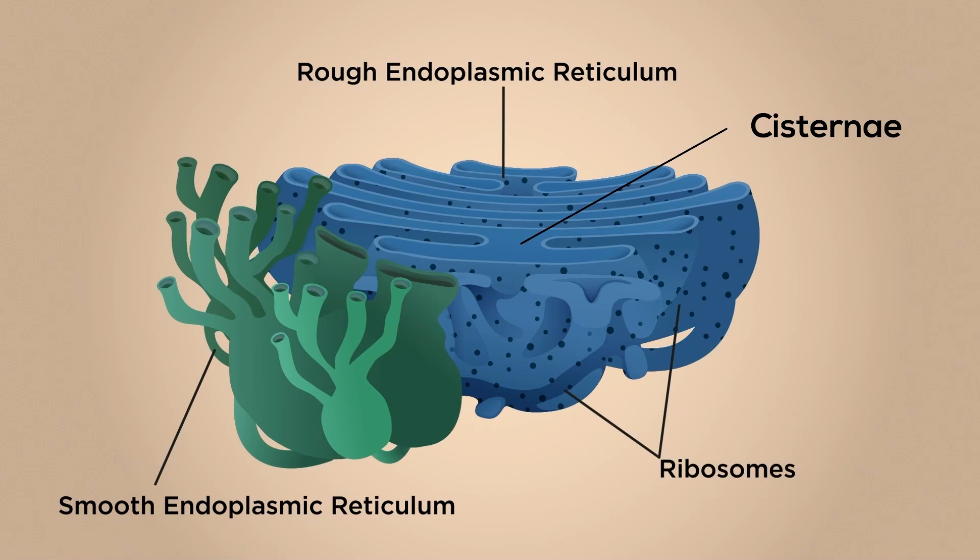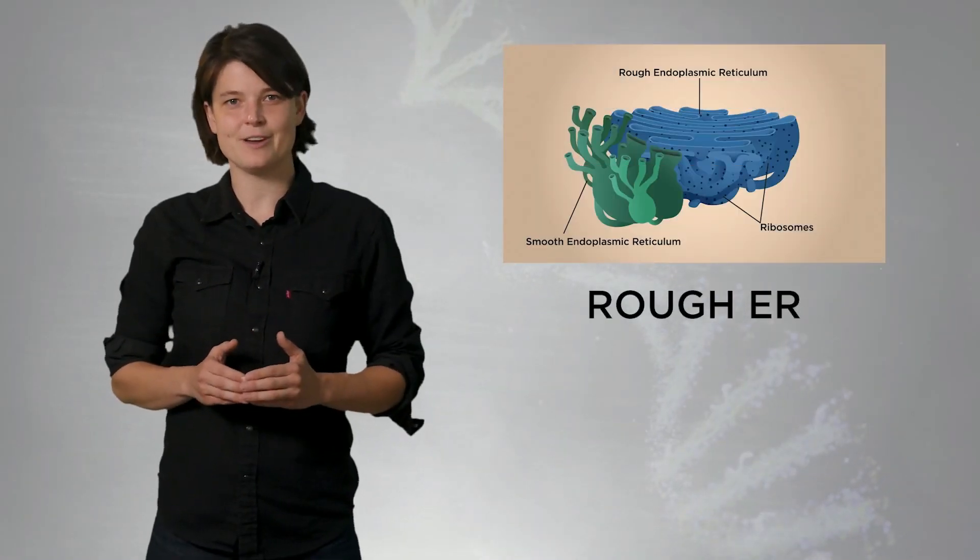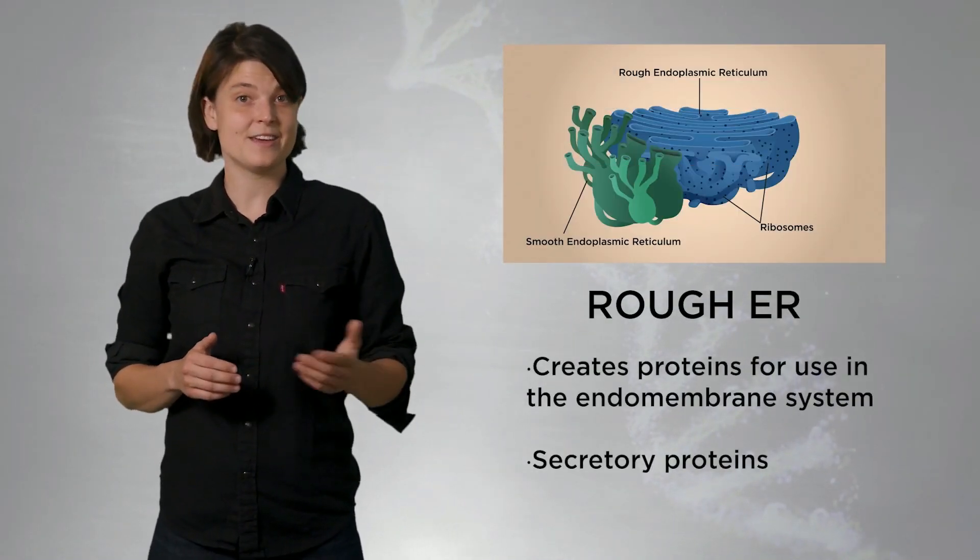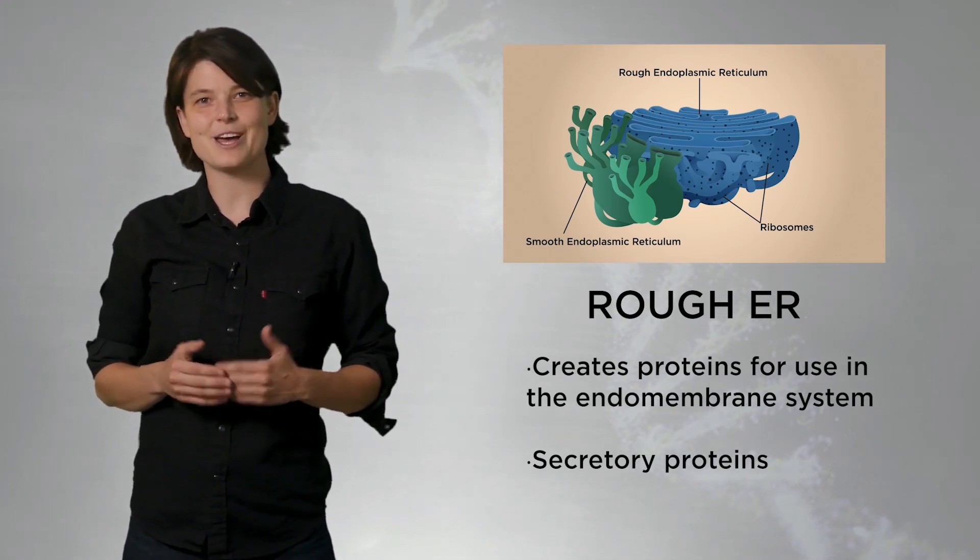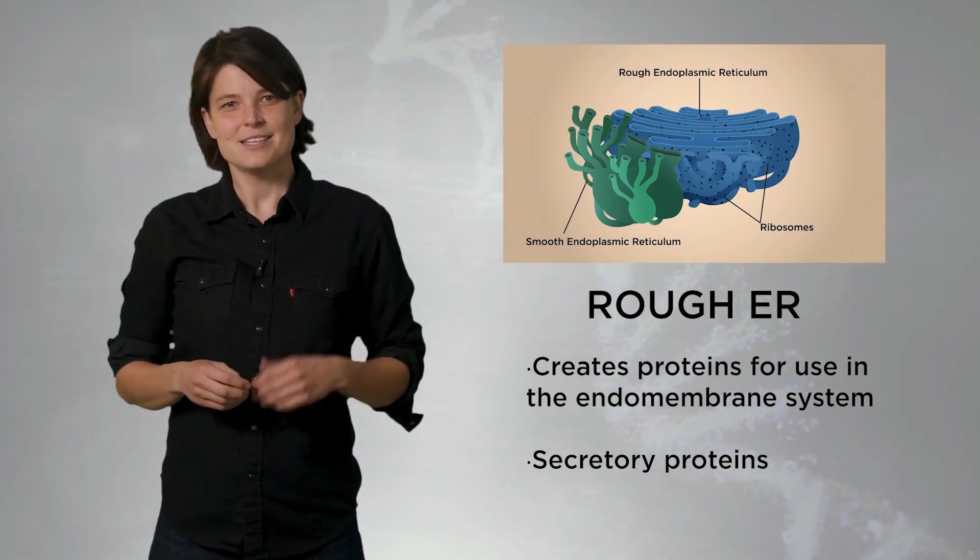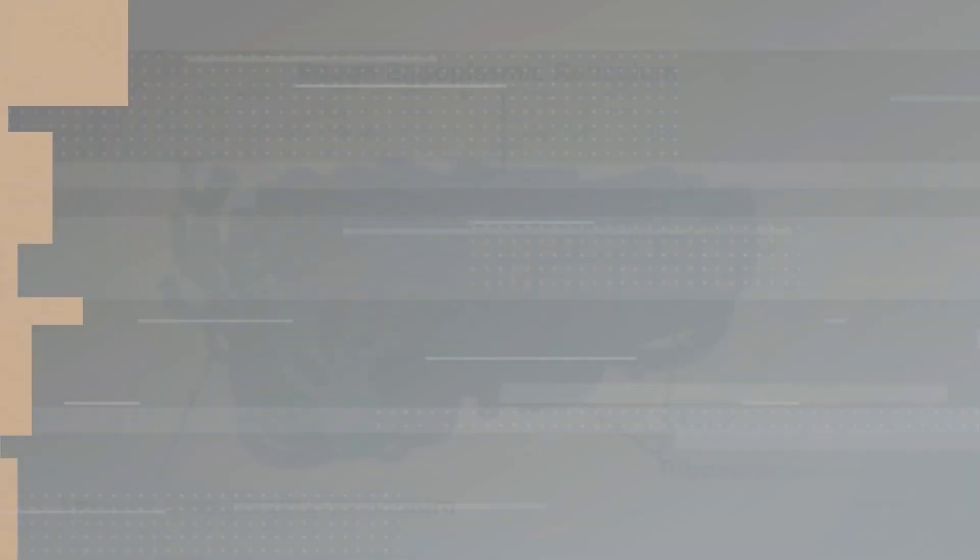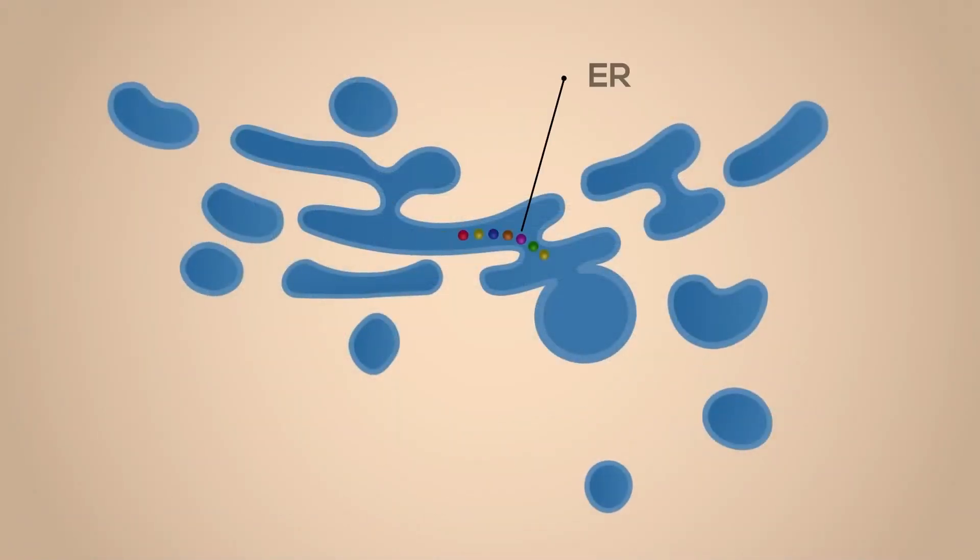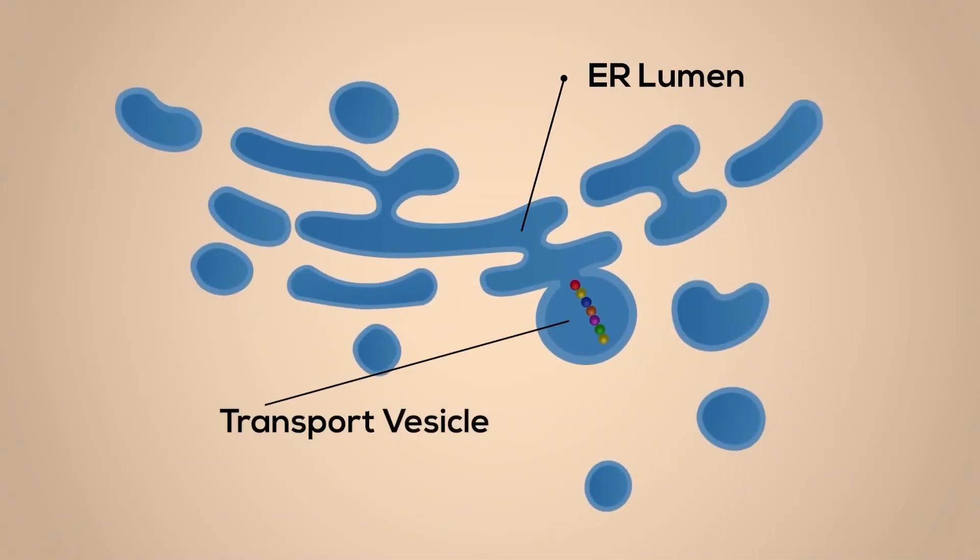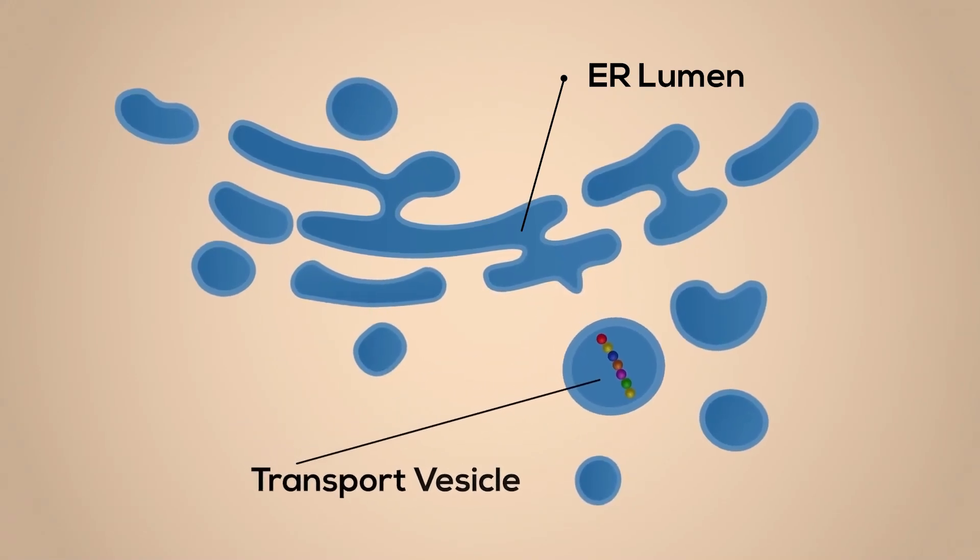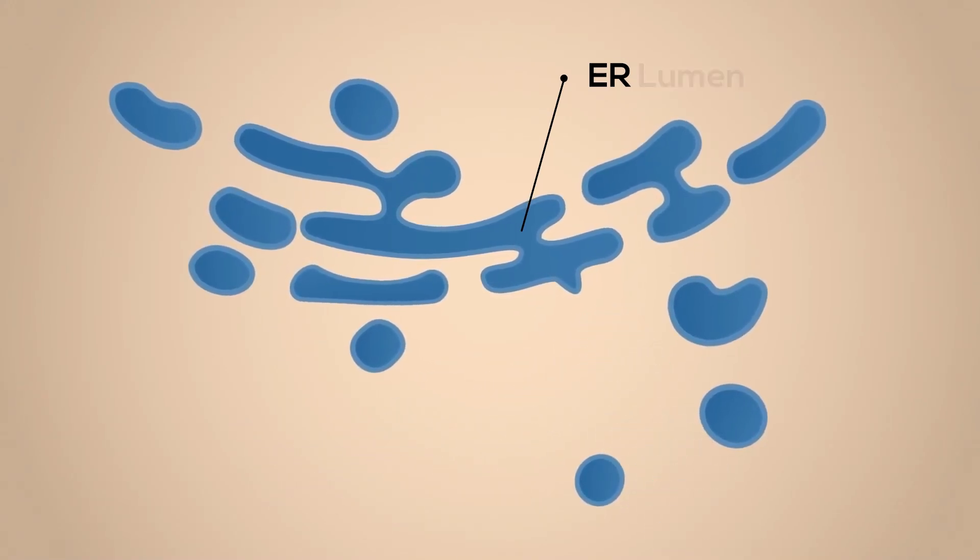As we mentioned before, the rough ER contains ribosomes. These ribosomes are scattered across its surface, making it appear rough under a microscope. The primary function of the rough ER is to create proteins, either for use within the endomembrane system or to be secreted for use outside of the cell. These secretory proteins are called glycoproteins, which are proteins with carbohydrates attached. Proteins leaving the endoplasmic reticulum travel and transport vesicles to their final destination. The rough ER also creates phospholipids that will become vesicles and membranes for other organelles.